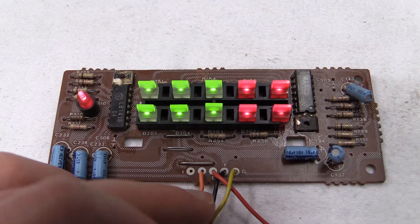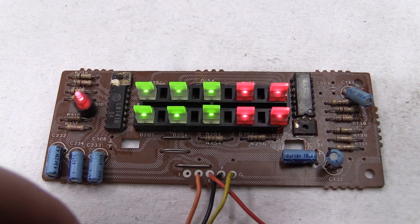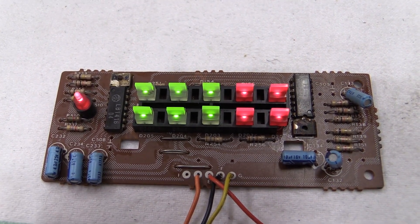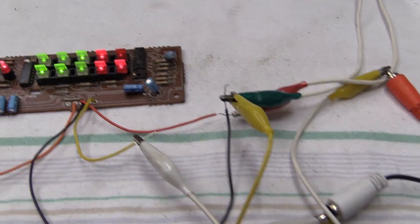Once again, we've got black for ground. Red is for plus 12 volts. We've got orange, we've got yellow. That's for the audio signals. Once again, messy hookup.